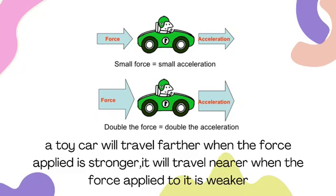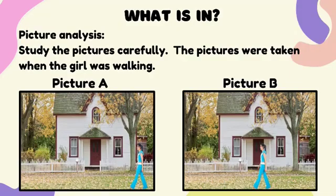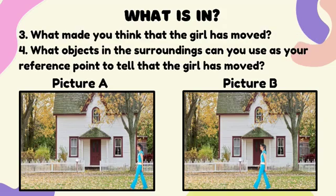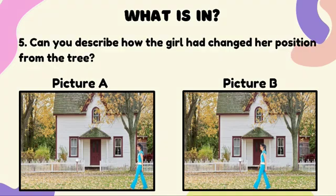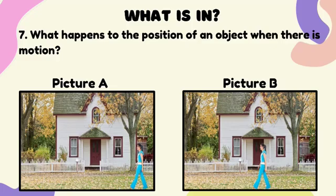Let's study the pictures carefully. The pictures were taken when the girl was walking. How do you describe the position of the girl in picture A? How about in picture B? What made you think that the girl has moved? What objects in the surroundings can you use as your reference point to tell that the girl has moved? Can you describe how the girl changed her position from the tree? Using the door of the house as your reference point, where will the position of the girl be if she walked a few more steps? What happens to the position of an object when there is motion?